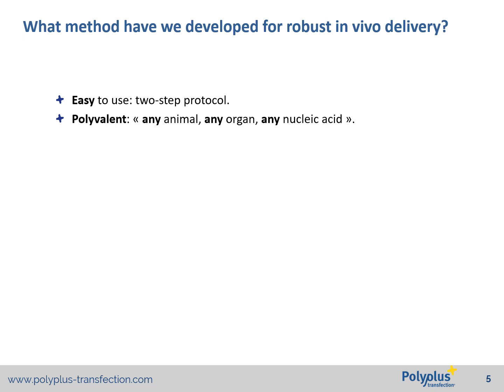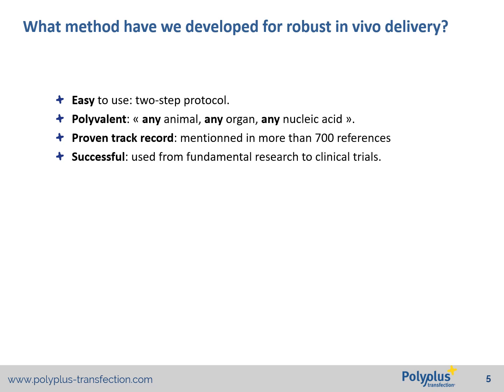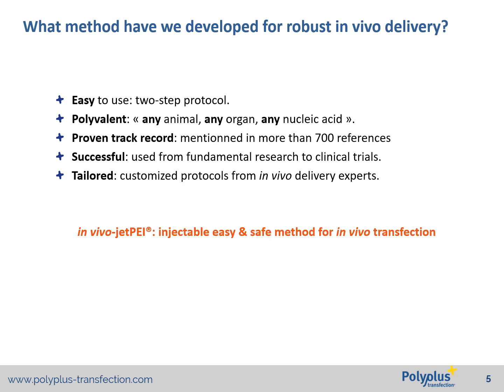We also wanted it to be polyvalent — able to deliver any type of nucleic acid, DNA, mRNA, sRNA, short oligonucleotides, etc. — to target any type of organ with no tropism, and in any animal model. That is indeed the case with our polymer-based transfection reagent, which is used as the in vivo delivery reagent in over 700 published in vivo studies and also used up to clinical trials. We have the expertise to provide tailored protocols for your in vivo models, including less common ones, all with our in vivo-jetPEI injectable, easy, and safe method for in vivo transfection.